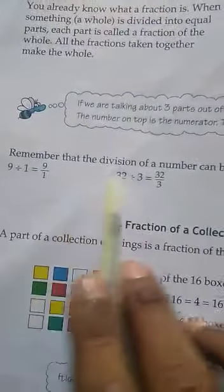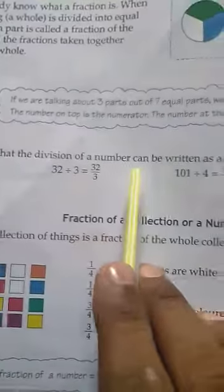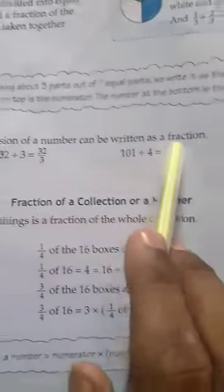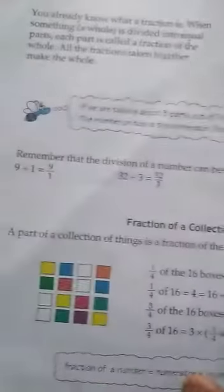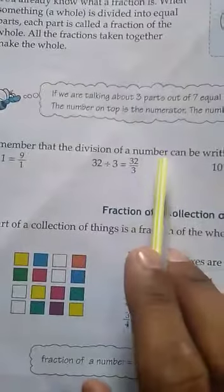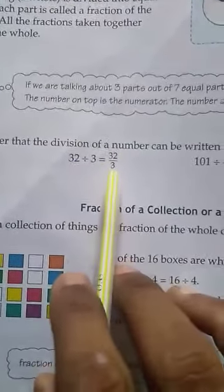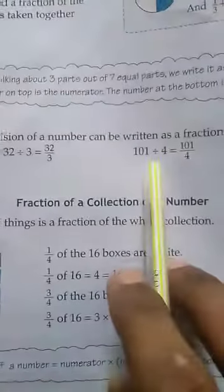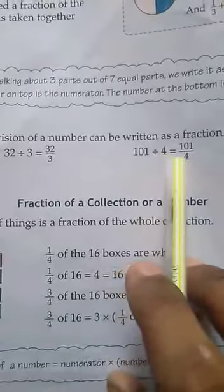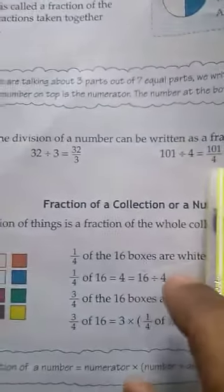Remember that the division of a number can be written as a fraction. याद रखिए कि किसी भी number का division हम उसे fraction में भी लिख सकते हैं — जैसे 9 divided by 1 is 9 upon 1, 32 divided by 3 is 32 by 3, 101 divided by 4 is 101 upon 4.